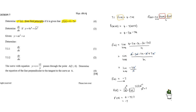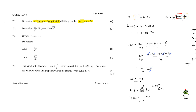If you review back to the introduction to differential calculus video, I pointed out that when you have a cubic function and take its derivative, you get a quadratic; a quadratic gives a linear function. Now we see that a linear function gives a constant function. This is because a linear function has a constant gradient throughout its line — the derivative represents the gradient of tangent lines along the curve, and for a linear function that gradient is always constant.